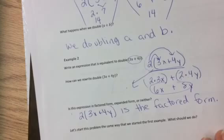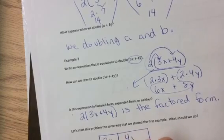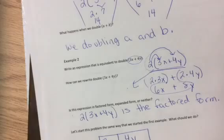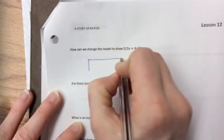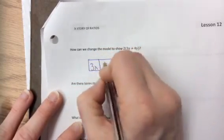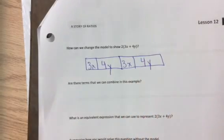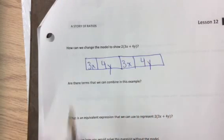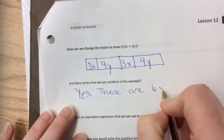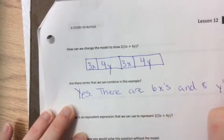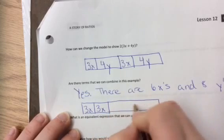We can make a model to show this by showing 3X and 4Y. And then we can change that model by doubling it by drawing 2 of them. And I'll do my best to make my 3X's the same and my 4Y's the same. Are there terms that we can combine in the next example? Yes! How many X's are there? There are 6X's and 8Y's. So we can group them by putting my 3X's together and then my 4Y's together.